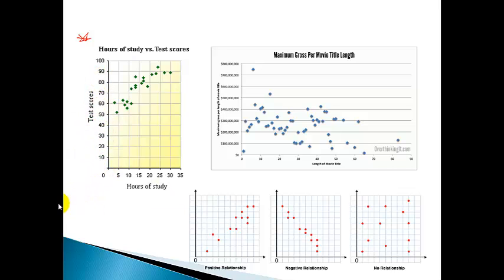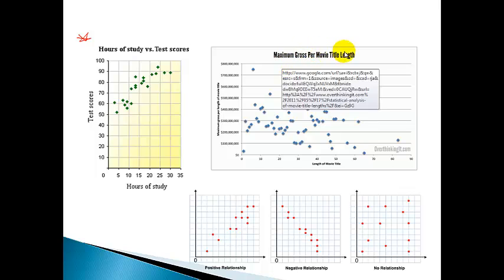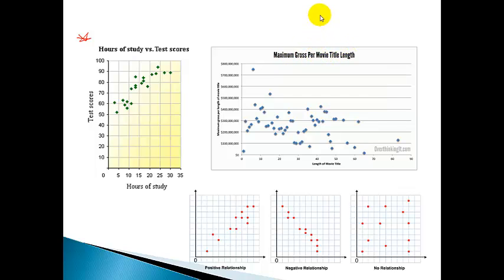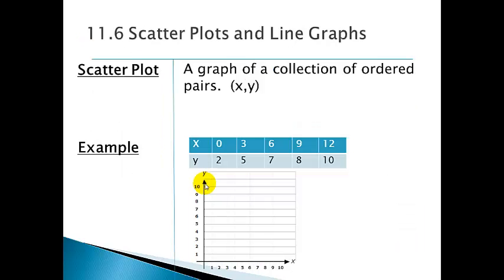This one I thought was interesting - somebody took the time to look at the length of movie titles and to see if there was a correlation, a relationship between the amount of money that it made. You can make these scatter plots for any data that you would like. So let's take a look at the actual definition of it.